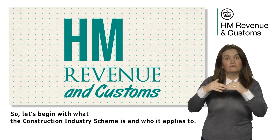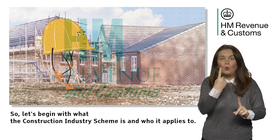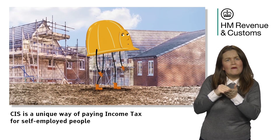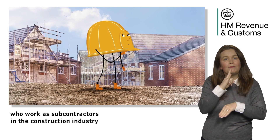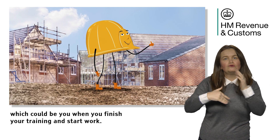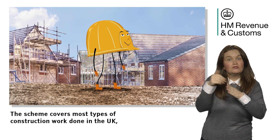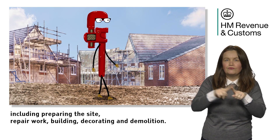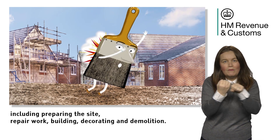Let's begin with what the Construction Industry Scheme is and who it applies to. CIS is a unique way of paying income tax for self-employed people who work as subcontractors in the construction industry, which could be you when you finish your training and start work. The scheme covers most types of construction work done in the UK, including preparing the site, repair work, building, decorating and demolition.